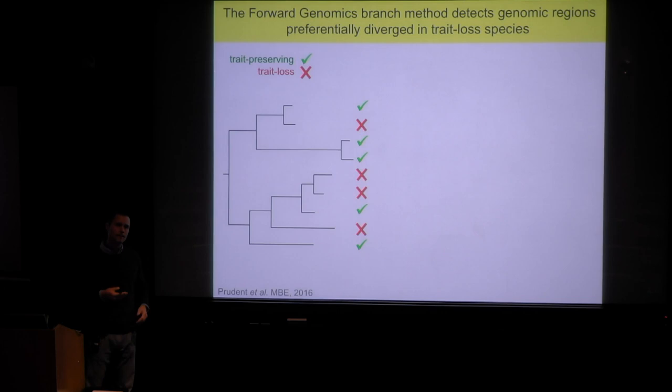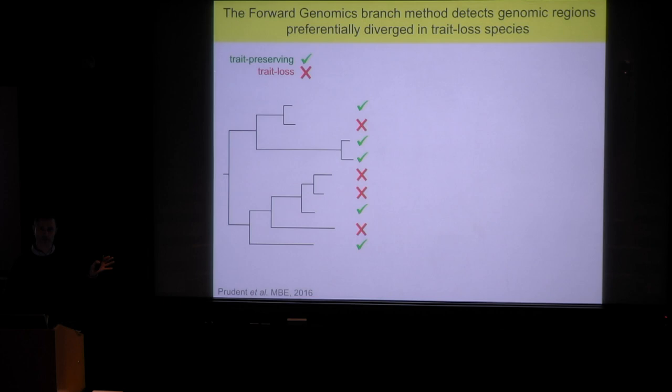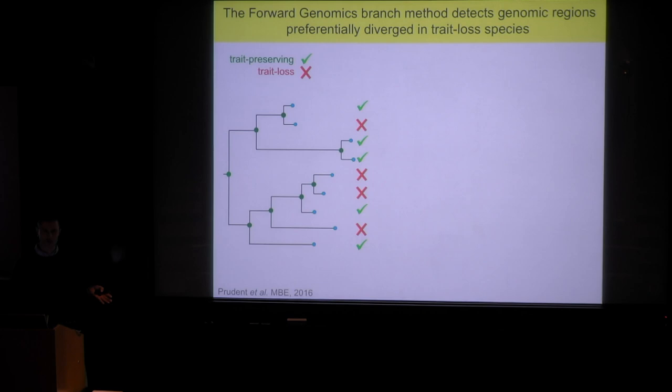I'd like to give a few more details of how we actually find such associations. We start with a phylogenetic tree of the species of interest, and focus on one of these conserved regions — typically on the order of a few hundred base pairs. We use the sequences at the tips, which are what we know, to computationally reconstruct ancestral states, which are the internal nodes in the phylogenetic tree.